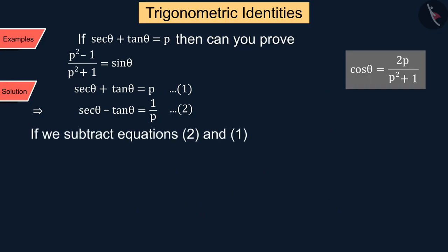Similarly, if we subtract equation 2 from equation 1, we get tan θ = (p²-1)/2p, where we change tan θ into sin θ/cos θ. After solving, put the value of cos θ.